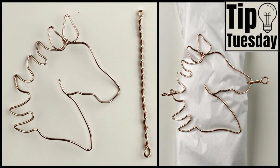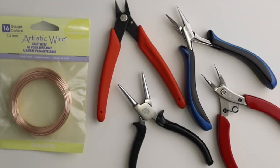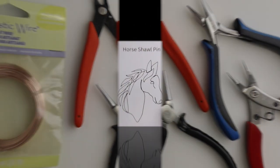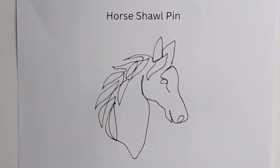Welcome to Tip Tuesday. Today we're going to make a horse shawl pin. What you're going to need for this project are your tools, and today I'm using 16 gauge artistic copper wire. You can download the template from my Etsy DIY shop. I'll link it up in the description below.